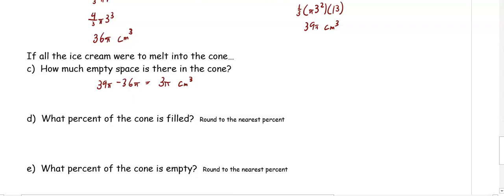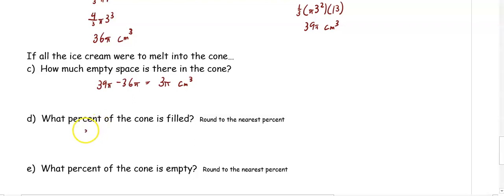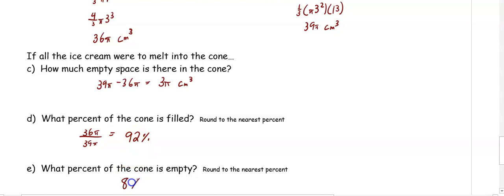What percent of the cone is filled? Just like finding a test score, we do the volume of the ice cream divided by the total volume of the cone, which equals 92%. Subtracting from 100, the empty space is 8%.